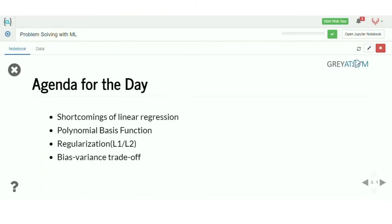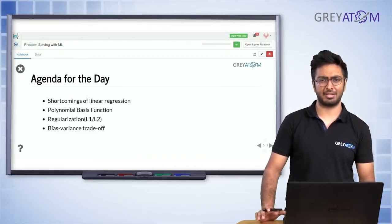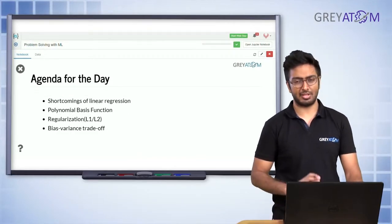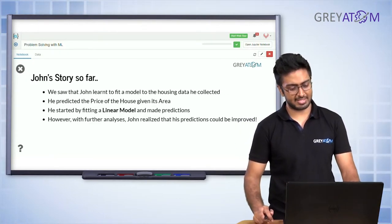Now we are going to go a step ahead in linear regression and understand some basic advanced techniques. First, we need to understand what are the shortcomings of linear regression. Then we need to understand the concept called polynomial basis function, regularization, bias-variance trade-off, and also something called validation. So those are four or five topics we are going to cover today.